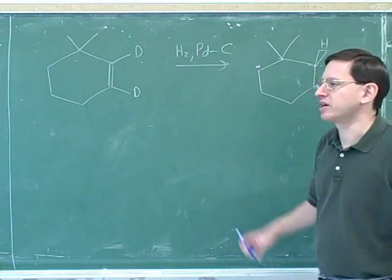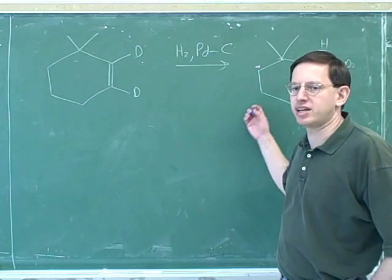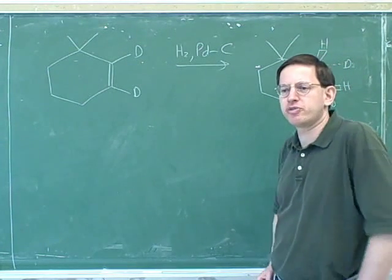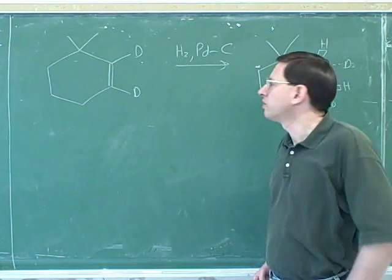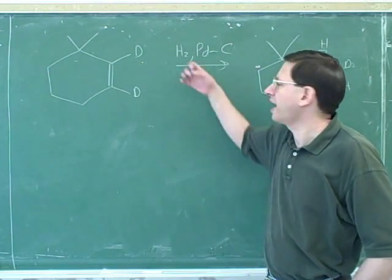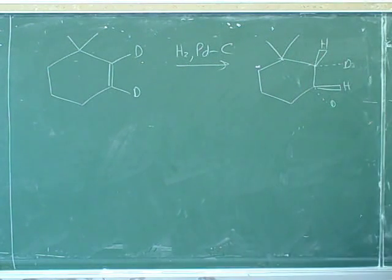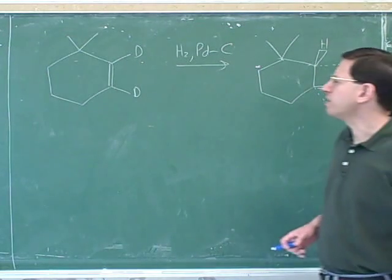We didn't go through the whole mechanism here, but the mechanism does explain why they come both in the same direction. Does anyone remember, just in words, why the mechanism shows the hydrogens are coming in from the same direction? Yes, the hydrogens connect to the metal, and then the ring attaches, so it attaches the H's on the same side, because they're from the same surface. That sounds right.